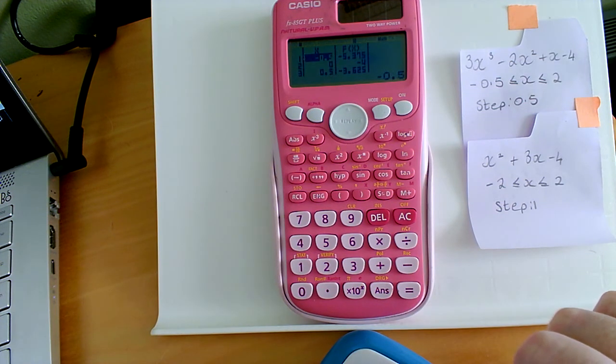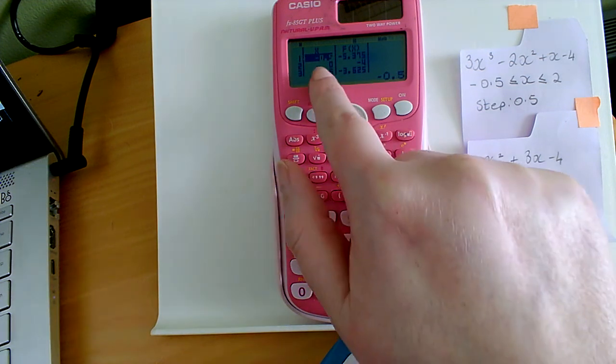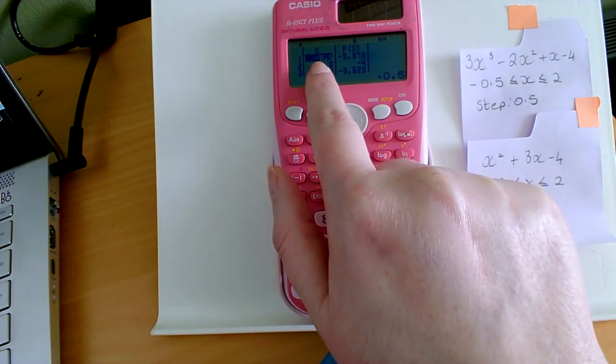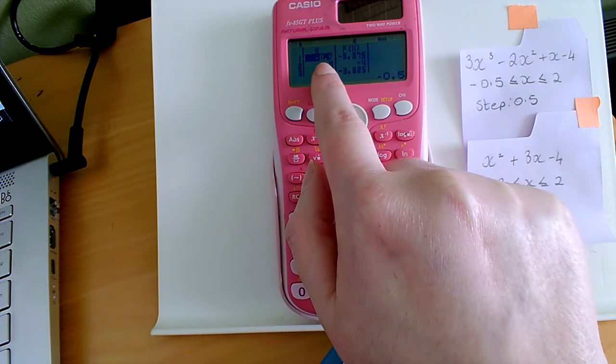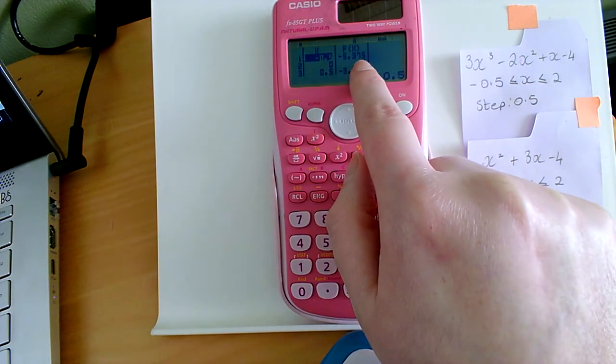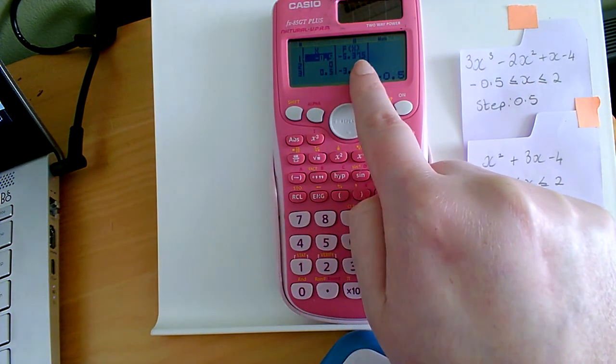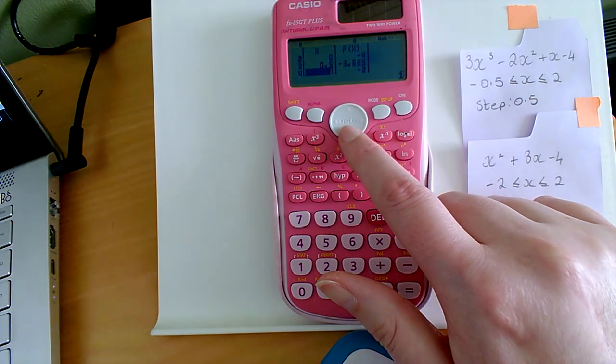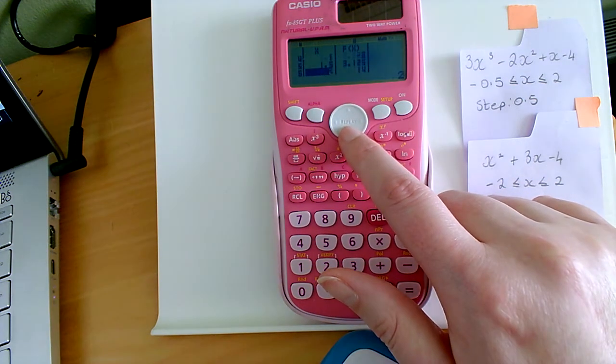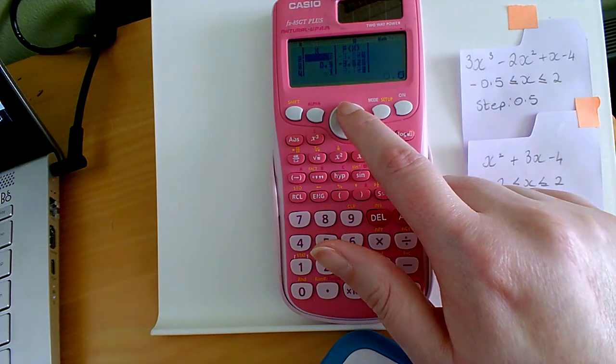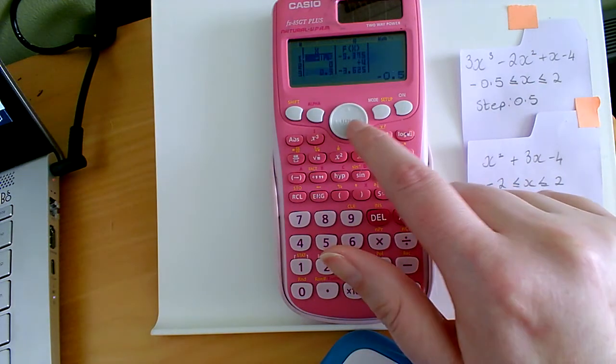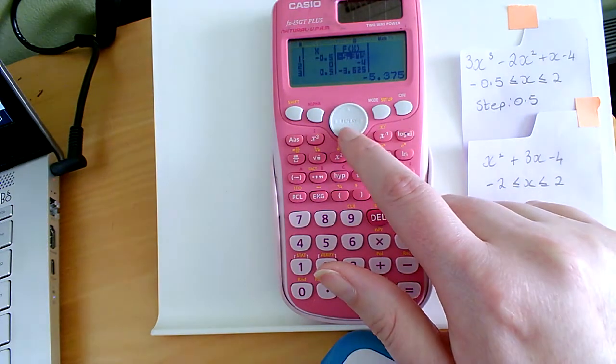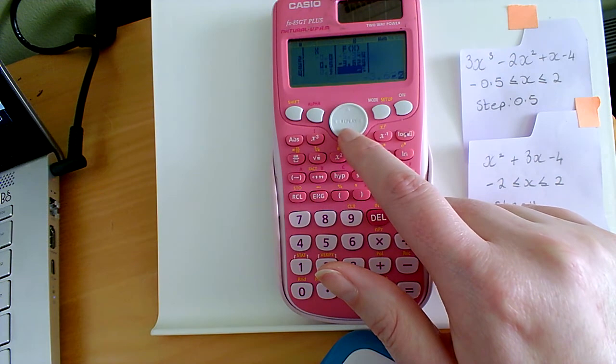Then your function table appears on your calculator. So just to make sure you know how to read this. Your first point of input is minus 0.5. Right beside that then you have your output of your function. So when you press the down arrow here, you're reading each of your inputs on the left hand side, underneath where it says x. And then when you go across, they're your output values. So you'll see here as you scroll down, they're your output values.